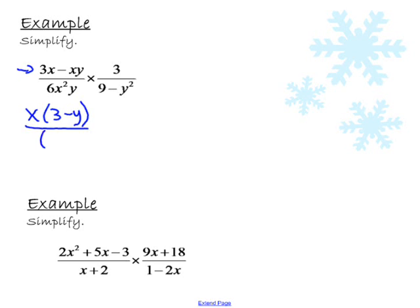The bottom is a monomial. Monomials, we don't have to factor. They give you the factors right out. 6x squared and y. On the top over here, the 3 isn't going to factor, but 9 minus y squared is. Does it have a GCF? No. But is it a difference of perfect squares? Yes. So we're going to say 3 plus y and 3 minus y.